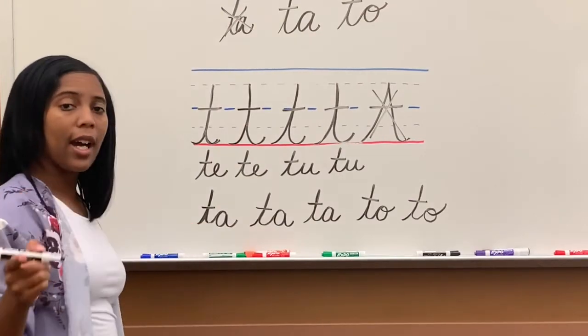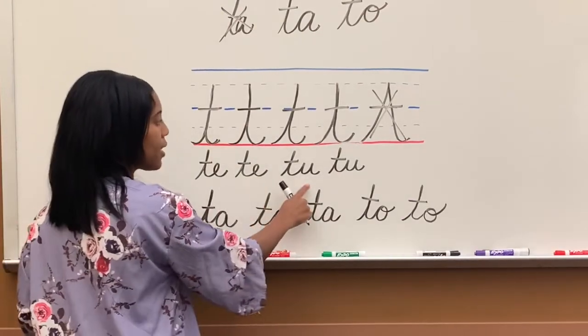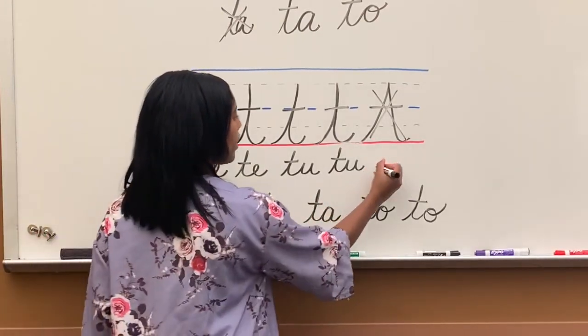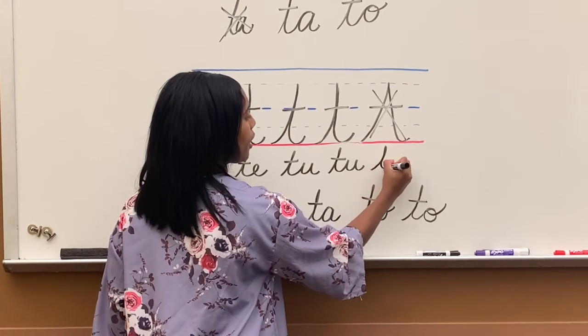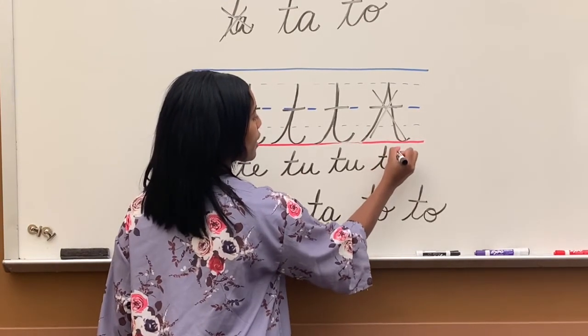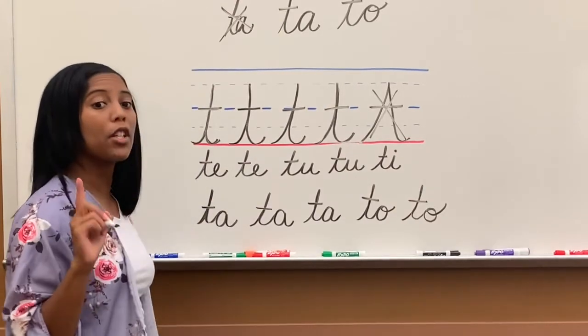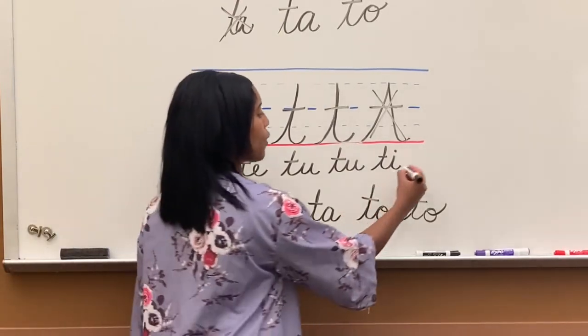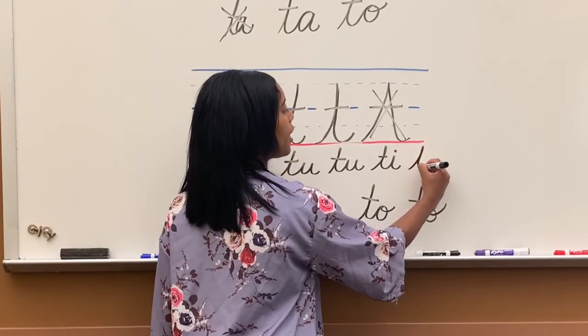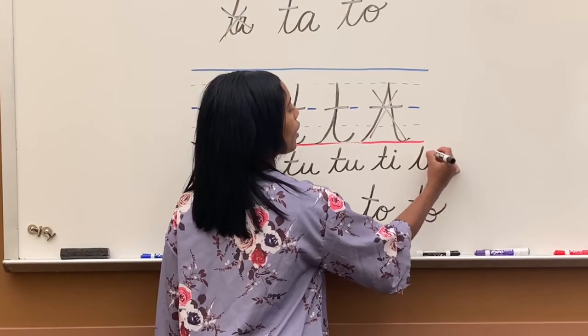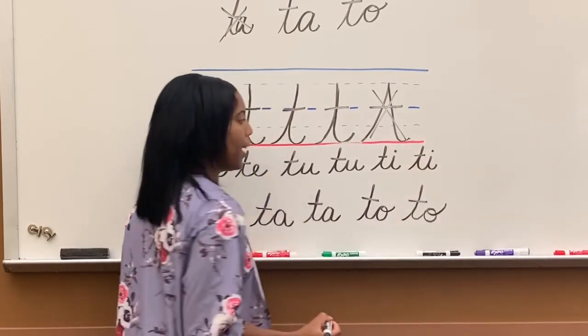Whenever I do T-I, same thing as T-E and T-U, I just simply write it. I do T, but remember, I don't cross in that until I am finished writing the entire thing. So if I'm doing T-I, I start with the T, do the I, cross my T, dot my I last.